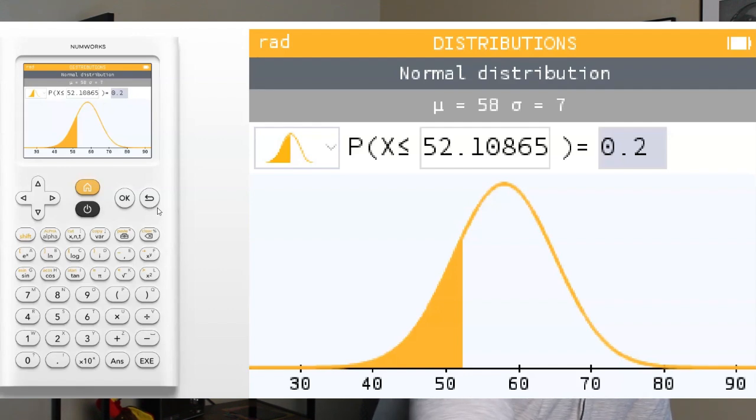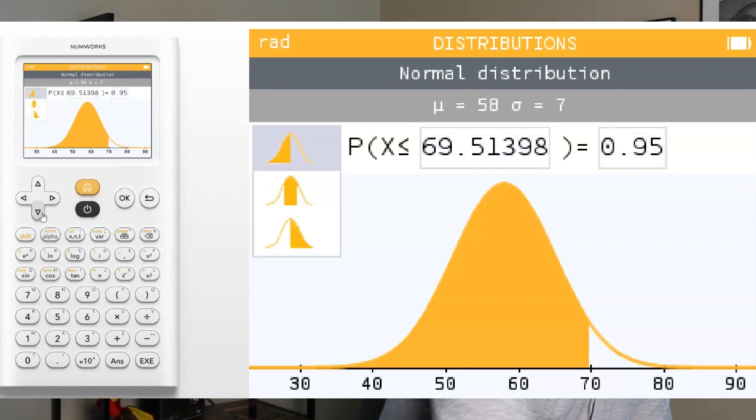All right, what about asking for the value that has 5% above it? Well, a couple different options here. So we can actually leave it on below and change this to 0.95, because if there's 5% above, there's 95% below.